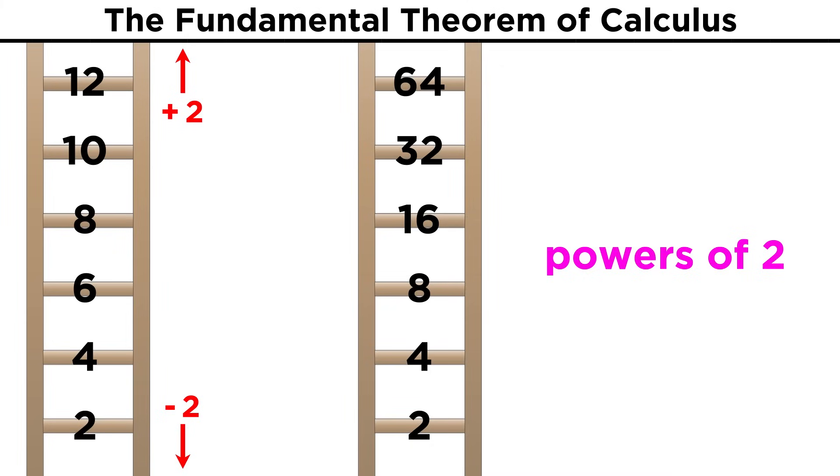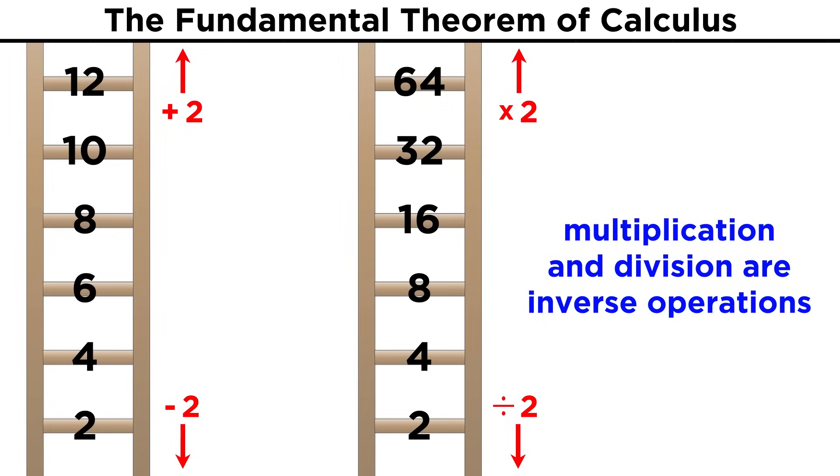If we instead write the powers of two, then up represents multiplying by two, and down represents dividing by two. Multiplication and division are therefore inverse operations.